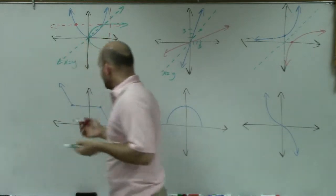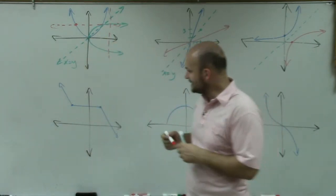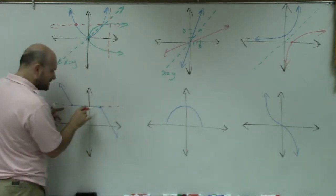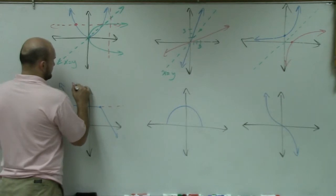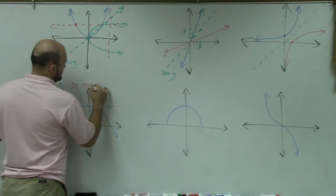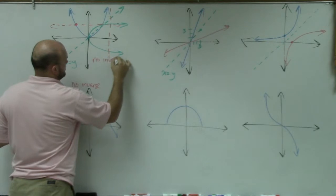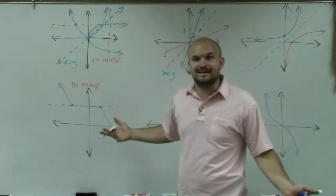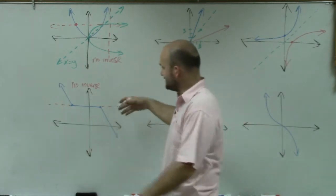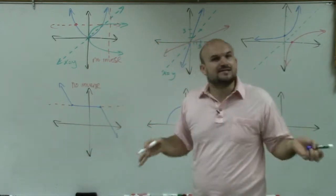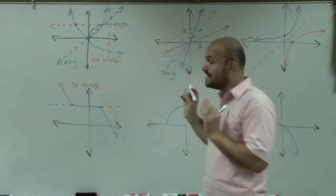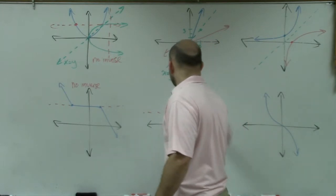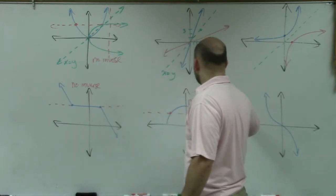Over here, as we look for the horizontal line test, you can see there are two points. This one has no inverse. So does this one — no inverse. There's no inverse because as the horizontal line comes across, there are two points that it hits. So even if you were to reflect it, the function wouldn't pass the vertical line test, and therefore it wouldn't be a function. So we say it has no inverse. This one is not one-to-one, so no inverse.